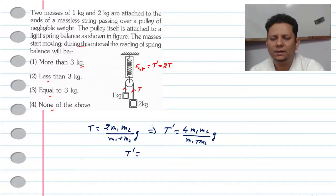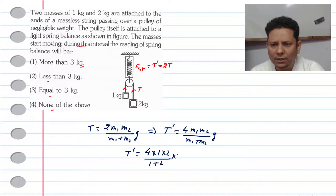T' will be equal to 4 multiplied by 1 multiplied by 2 divided by 1 plus 2 into 10. This will be equal to 4 into 2, which is 8 divided by 3.